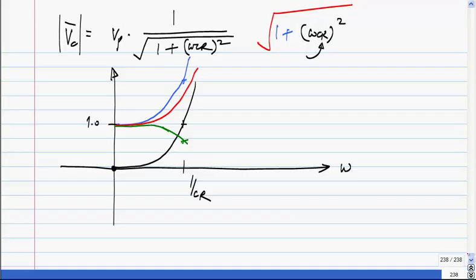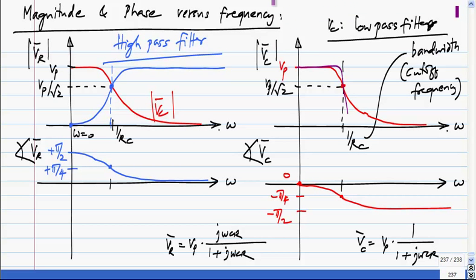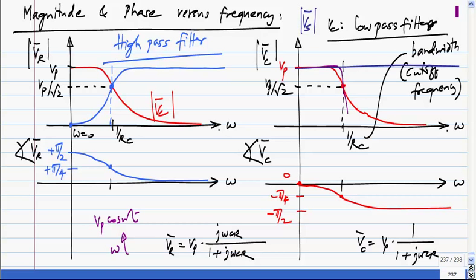Low pass filter simply means it allows low frequencies and blocks high frequencies. If you look at this plot: I have applied Vp*cos(omega*t) and swept omega from 0 to infinity. At the output I get a sinusoid of amplitude Vp up to some frequency, and at very high frequencies I get nearly nothing. So although I am applying the same amplitude sinusoid at input, the output is much smaller at high frequencies — it is passing low frequencies and blocking high frequencies. That is what a low pass filter is.